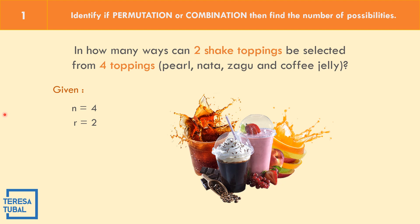This example is a combination because order is not important — any topping can come first. So we have combinations of four objects, that is N equals four, taking two at a time.